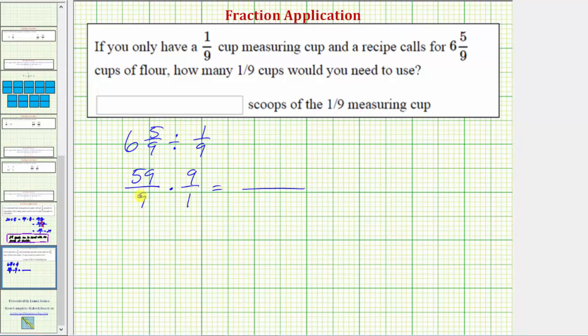To multiply fractions, we multiply the numerators and multiply the denominators. So the numerator is fifty-nine times nine, the denominator is nine times one.